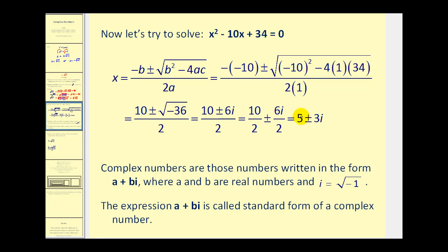This led to another set of numbers called the complex numbers. Complex numbers are those numbers written in the form of a plus bi, where a and b are real numbers, and i is the square root of negative 1. So we have a real part — that's the a part — and we have the imaginary part, the bi part. And a plus bi is called the standard form of a complex number.